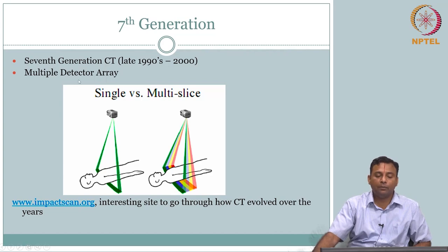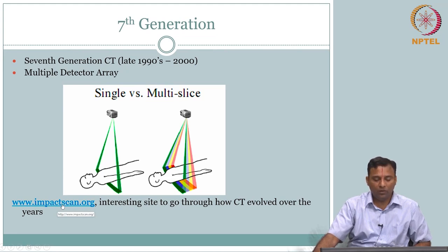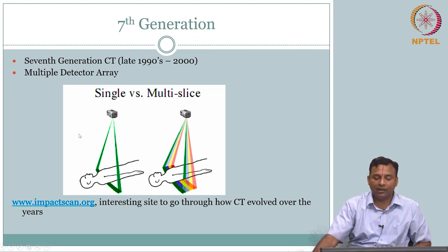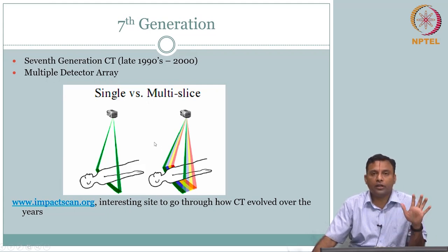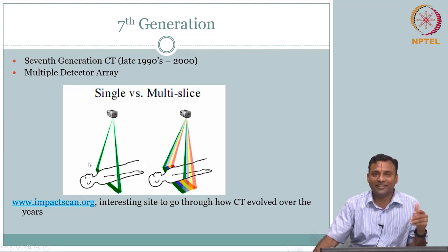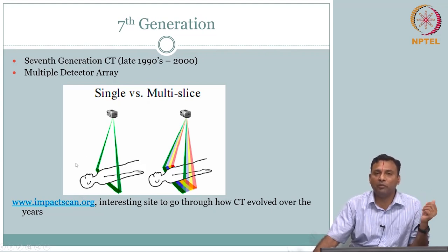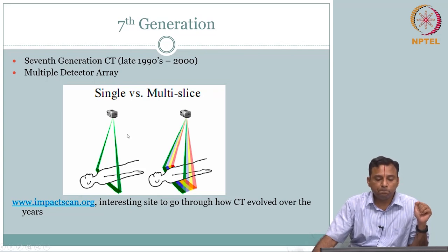So you can have multiple detector arrays. There is a website I accessed a year ago which I found very useful — there are several more animations and sketches along the line of what we are discussing here. I have no conflict of interest; I just found it useful so you may want to take a look at it. So that is your seventh generation.